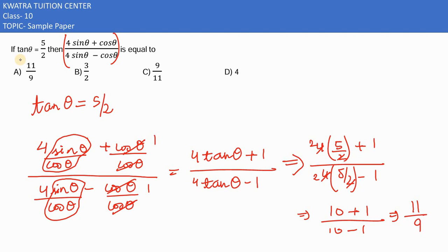So 11 in the numerator. And in the denominator, what do we get? It would be 9, which is equal to option C, 11 by 9.